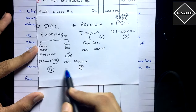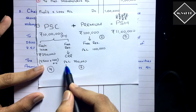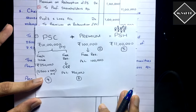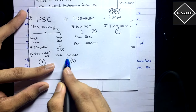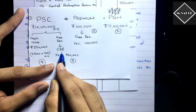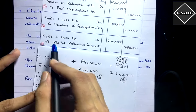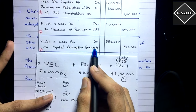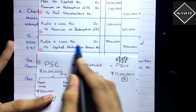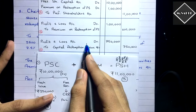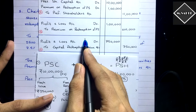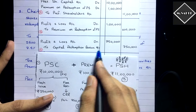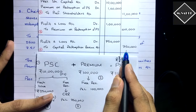The third entry is the CRR entry — transferring free reserves to Capital Redemption Reserve to comply with Section 55. The entry is: Profit and Loss Account Dr. ₹7,50,000; To Capital Redemption Reserve A/c ₹7,50,000. We debit P&L because we are reducing that reserve (equity decreases — debit), and we credit CRR because that reserve is being created and increased (equity increases — credit).